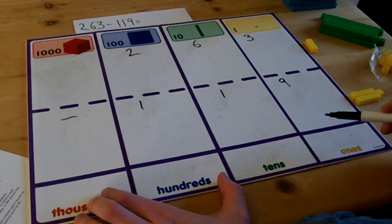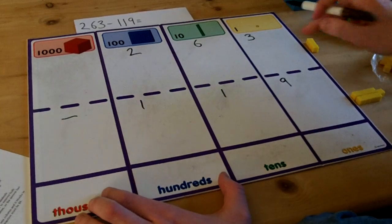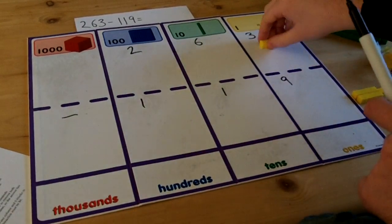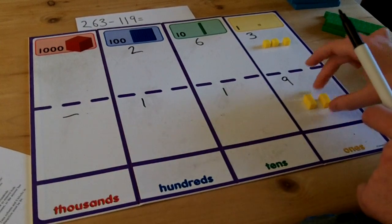As I'm using Dienes blocks, I must put the correct cubes on the correct numbers. So in the ones column I have got 3 and 9. This means I must put three cubes on top of the 3 and nine cubes on top of the 9.